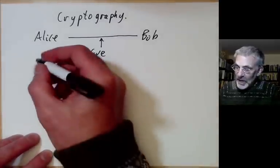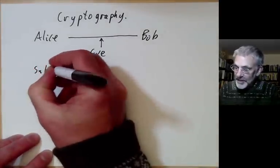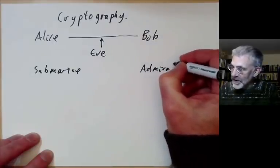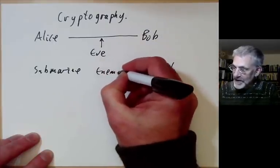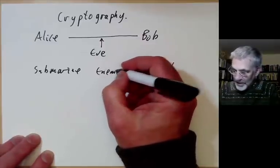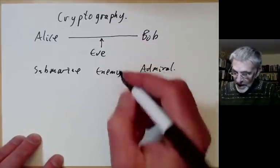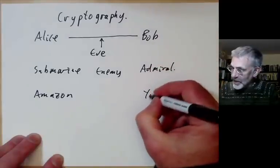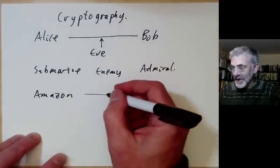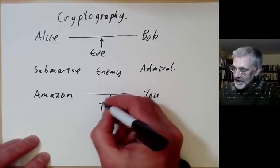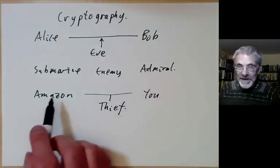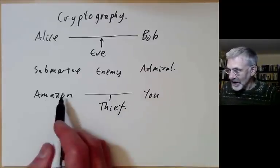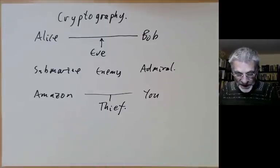One example: Alice might be a submarine, Bob might be the admiral controlling the submarine, and Eve might be some enemy trying to sink the submarine. Another example: Alice might be Amazon, Bob might be you trying to buy something, and the person in the middle might be someone trying to steal your credit card number. The whole of internet commerce depends on being able to communicate without someone decoding what you're saying.